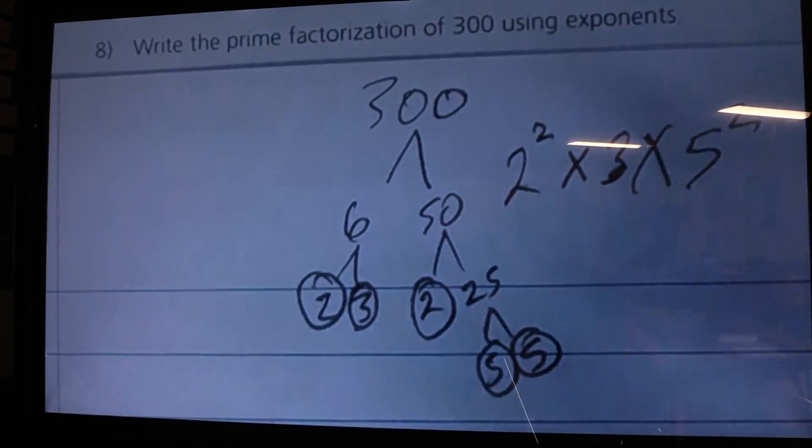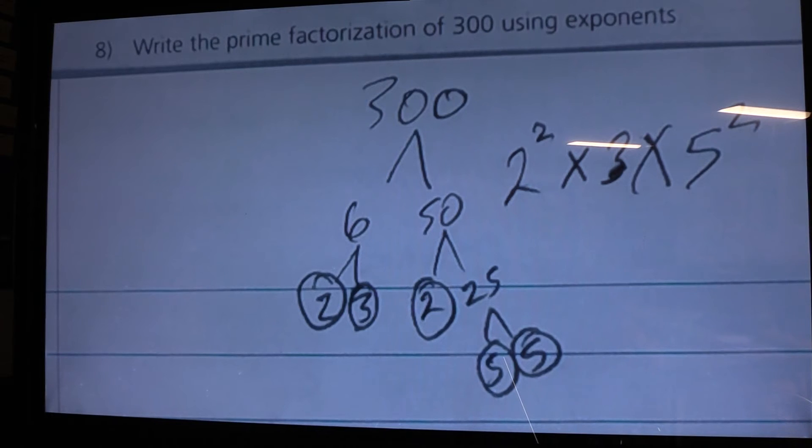So to write the prime factorization of 300 using exponents, I could say 2 squared times 3 times 5 squared. And that's the prime factorization of 300 using exponents.